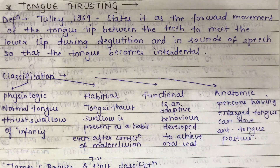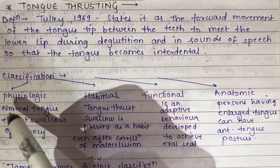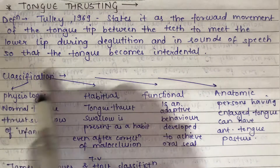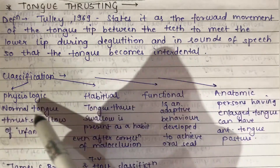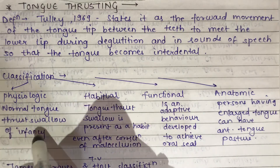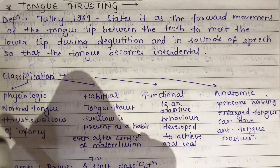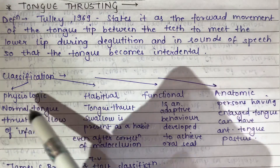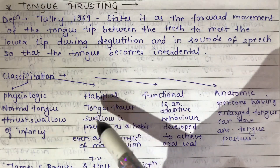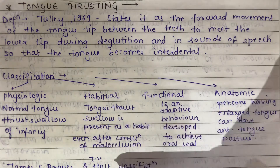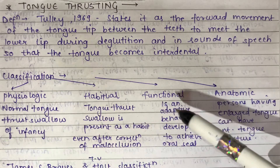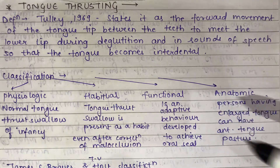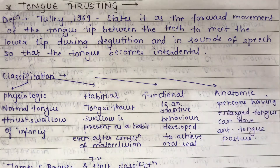Tongue thrusting is classified into four forms: physiological, habitual, functional, and anatomic. Physiological comprises the normal tongue thrust swallow of infancy. Habitual means the tongue thrust swallow persists as a habit even after correction of malocclusion. In functional, the tongue thrust mechanism is an adaptive behavior developed to achieve oral seal.